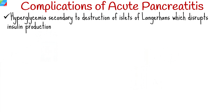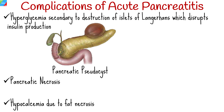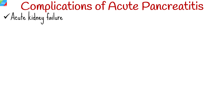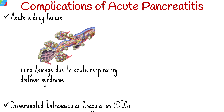Complications of acute pancreatitis include hyperglycemia secondary to destruction of islets of Langerhans, which disrupts insulin production; pancreatic pseudocyst; pancreatic necrosis; hypocalcemia due to fat necrosis; acute kidney failure; lung damage due to acute respiratory distress syndrome; and disseminated intravascular coagulation.